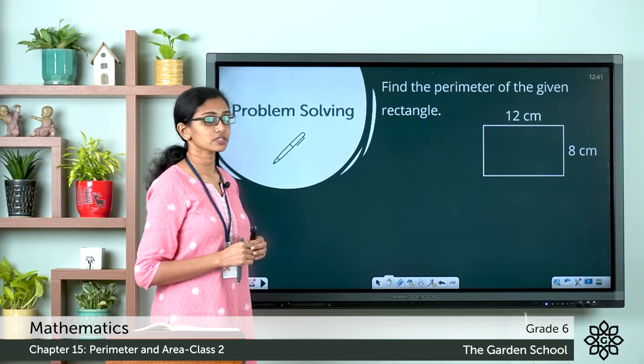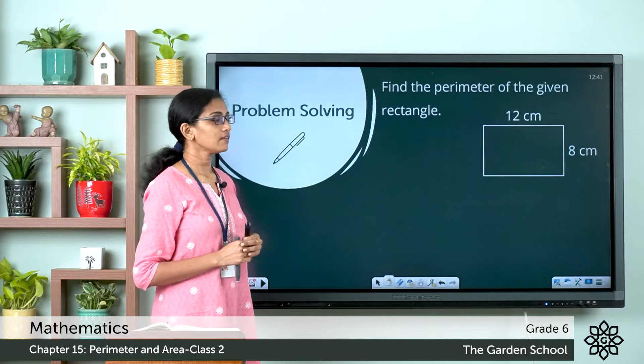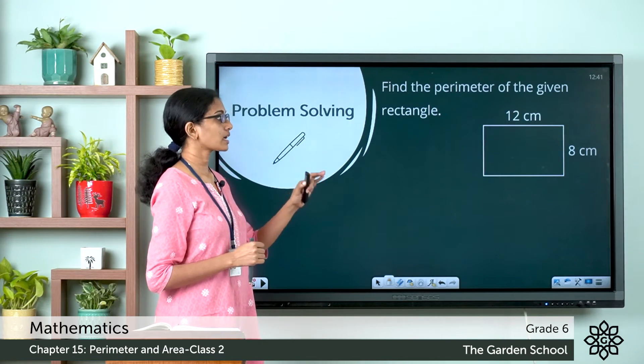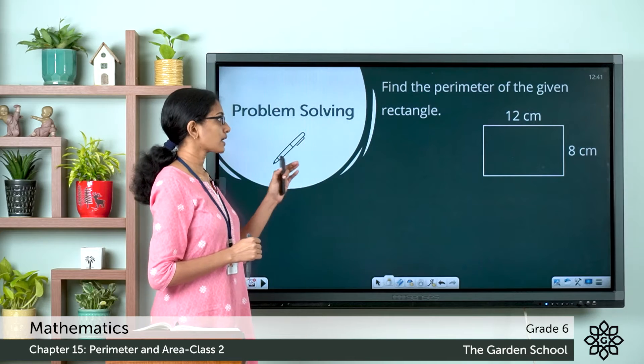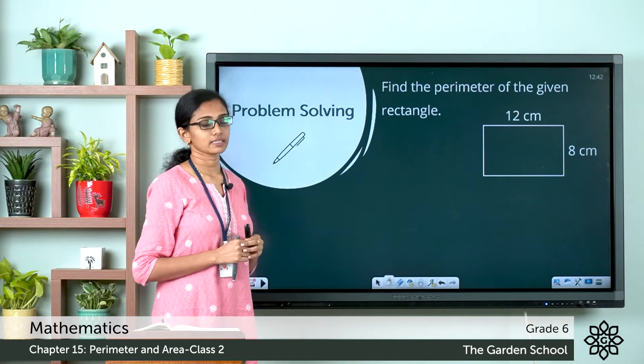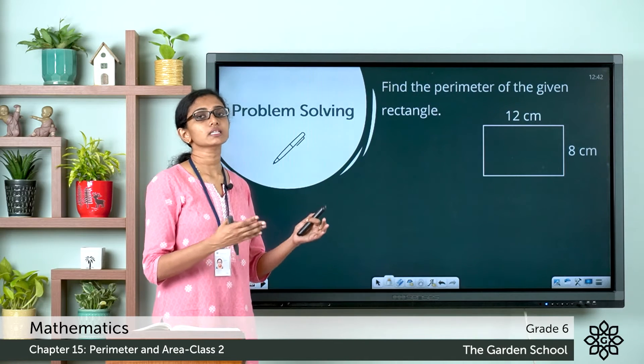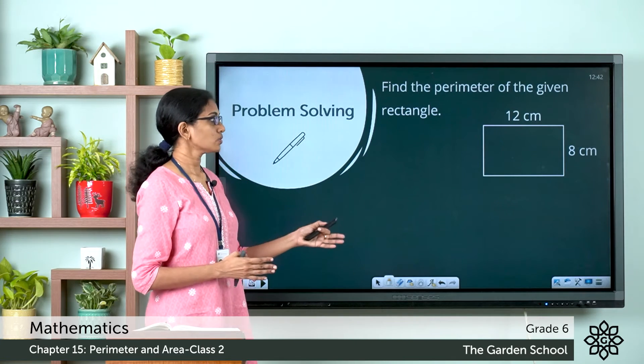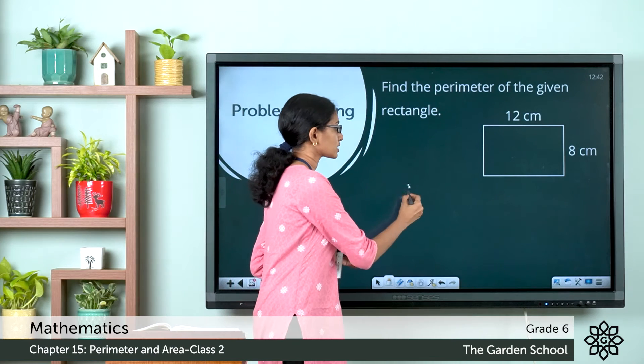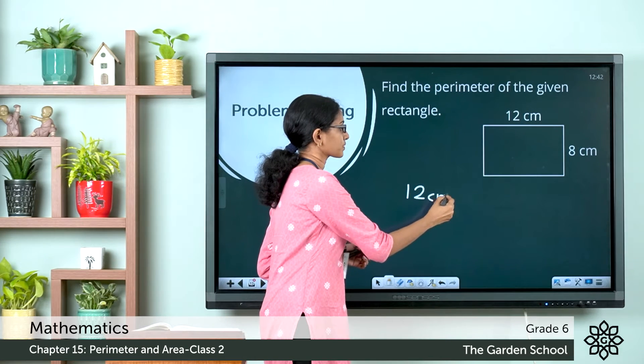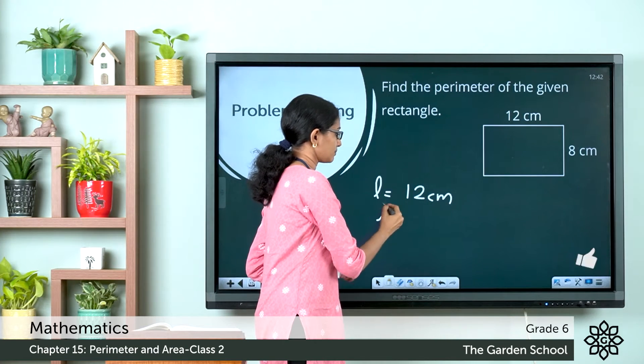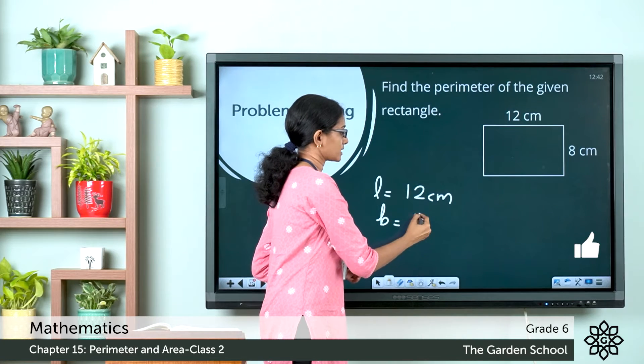So here this rectangle has got a length 12 centimeter and a breadth 8 centimeter. We need to find the perimeter of this rectangle. So by formula, the perimeter is equal to 2 times the length plus breadth. The length is 12 centimeter and the breadth is equal to 8 centimeter.